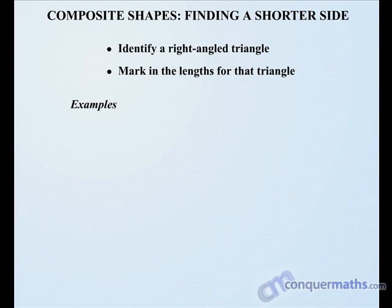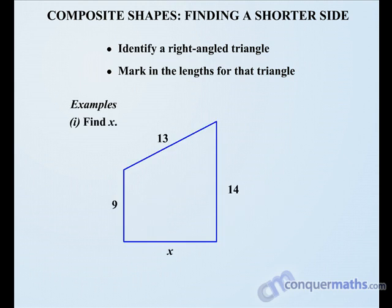Let's consider these examples. We're asked to find X. Again, it's a composite shape, not just a plain right-angled triangle, but we need to identify where one exists. So if we draw a line across there, there's our right angle, and there is the right-angled triangle.